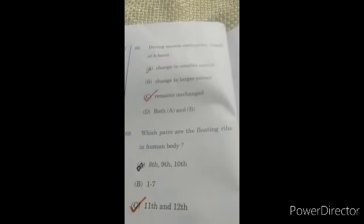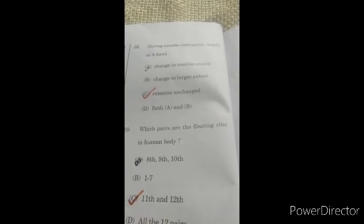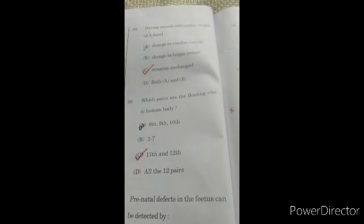Question number 68: during muscle contraction, length of A band? The answer is C, remains unchanged. Floating ribs: which pairs are the floating ribs in human body? C option, 11th and 12th.